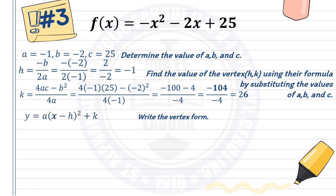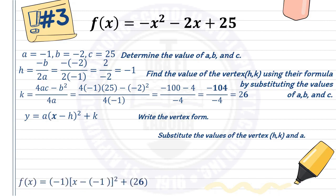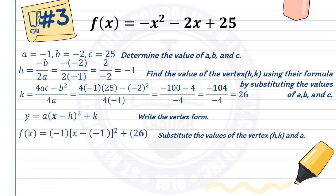Next, write the vertex form and substitute the values of h, k, and a. With a = negative 1, h = negative 1, and k = 26: f of x equals negative 1 times quantity x minus negative 1 squared plus 26. Simplifying, f of x equals negative quantity x plus 1 squared plus 26.